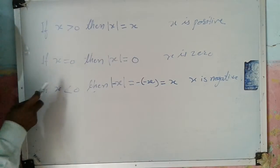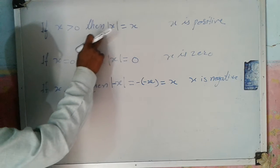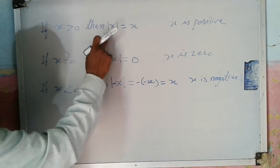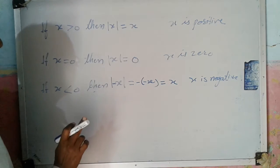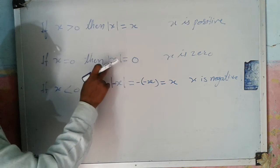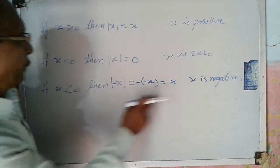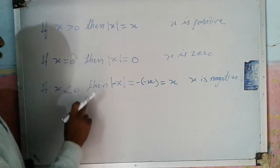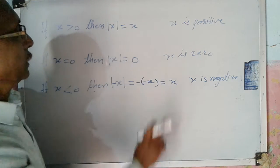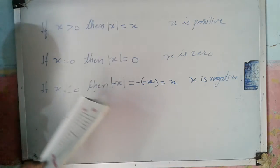Now see: if X is greater than 0, that means X is positive, then the Absolute Value of X is X. If X is 0, then the Absolute Value of X is also 0. And if X is less than 0, that means X is negative, then Absolute Value of X is its opposite number, that means minus X — minus of minus X.